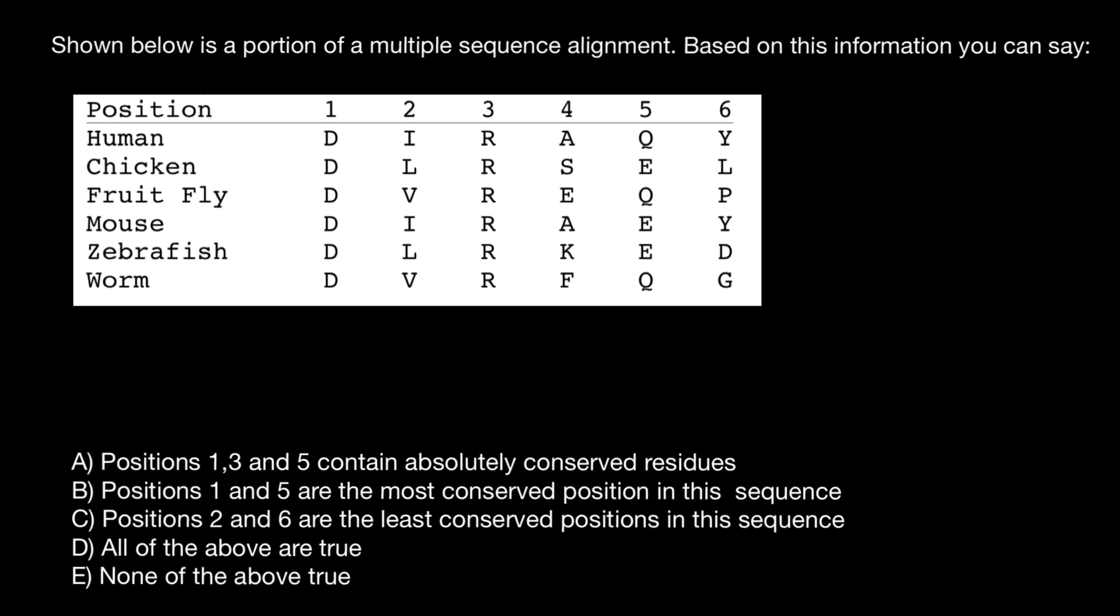Let's take a look at this table. We have human, chicken, fruit fly, mouse, zebrafish, and worm sequence of a certain polypeptide.